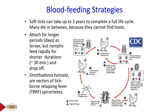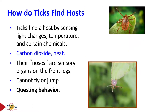How do ticks find their hosts? They cannot fly or jump — they can only walk and crawl. They are very sensitive to their environment, recognizing light changes, temperature, chemicals, odors, carbon dioxide, and heat. Their sensory organs are on their front legs — those are their 'noses.' They wait in a position known as questing.